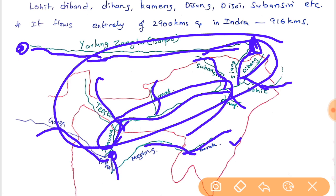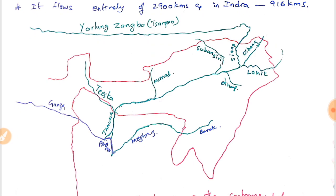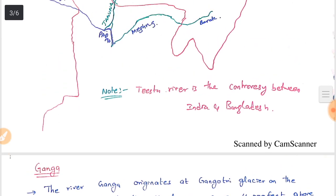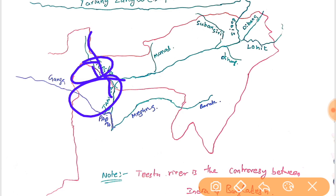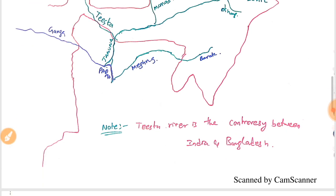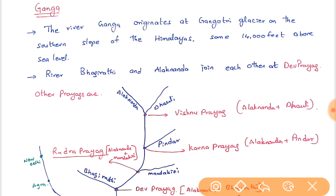Barak is a separate river flowing in the northeastern states — unrelated to Brahmaputra. When Barak enters Bangladesh it is called Meghna, not to be confused with Brahmaputra's Bangladesh names (Jamuna and Padma). Tista river, flowing through Sikkim and West Bengal along the Bangladesh border, has become a bone of contention between India and Bangladesh.